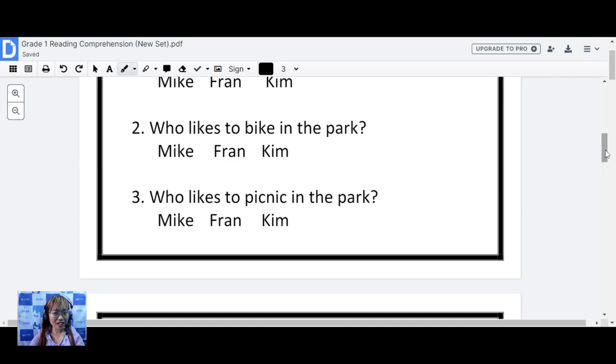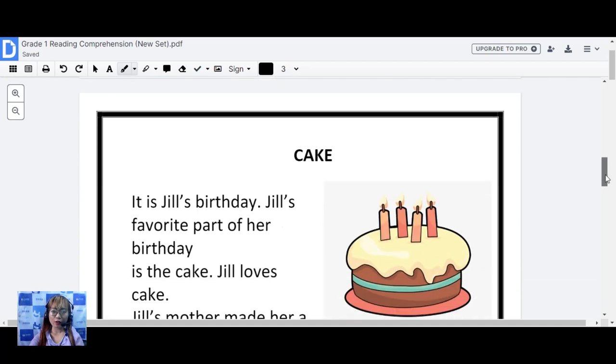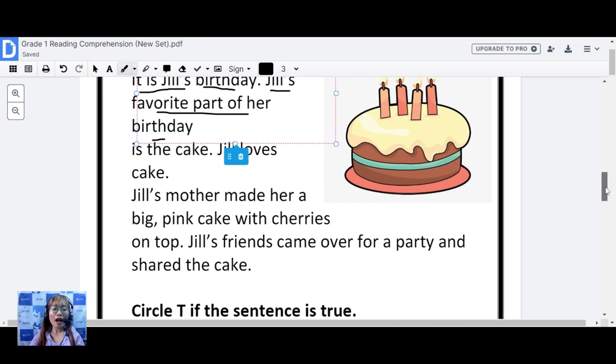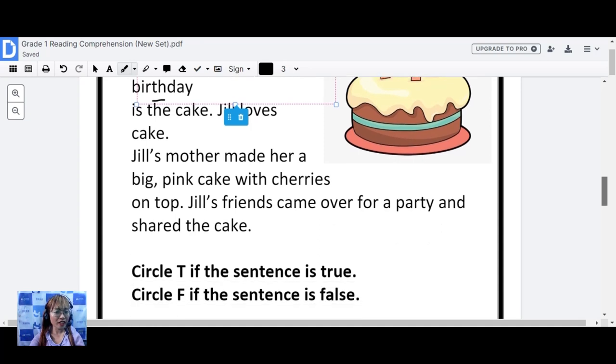Now, let's move on to the second story. Okay, here. It is all about cake. It is Jill's birthday. Jill's favorite part of her birthday is the cake. Jill loves cake. Jill's mother made her a big pink cake with cherries on top. Jill's friends came over to a party and shared the cake.